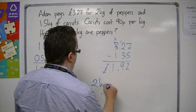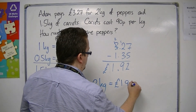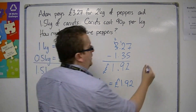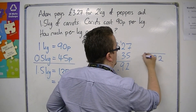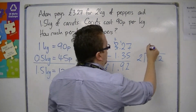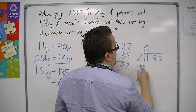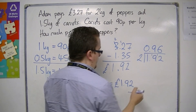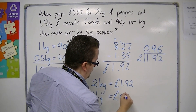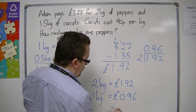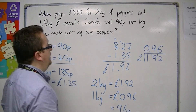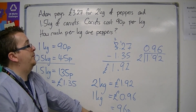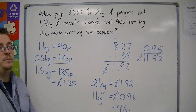2 kilos of peppers was £1.92, so 1 kilo would be half of that. You can either do that one in your head or you can do short division. 2s into 19 go 9 with 1 left over. 2s into 12 go 6. So we have 0.96 pounds, or 96 pence. Peppers are 96 pence per kilo, while the carrots were 90p per kilo.